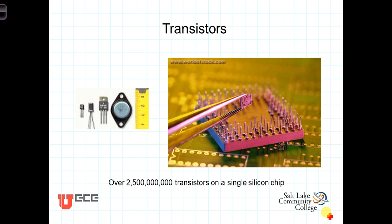During the next 60-plus years since the transistor was first invented, transistor technologies exploded. Gordon Moore, a co-founder of Intel Corporation, is credited with observing that over the history of computing hardware, the number of transistors on integrated circuits doubles approximately every two years. This law is named after Gordon Moore, who described the trend in a 1965 paper. It's known as Moore's Law.